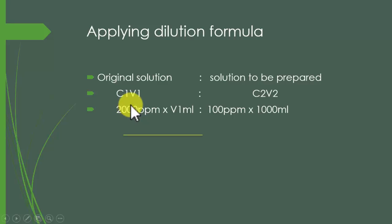V1 is the volume that is to be taken by us. C2 is our desired concentration, which is 100ppm, and V2 is the volume within which we have to prepare our solution. We are preparing this solution in 1000ml, so after doing these calculations, volume comes out to be 5ml.